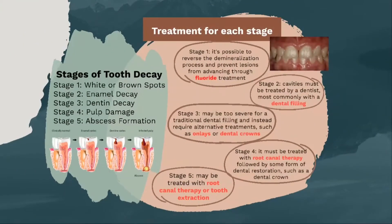So what are the treatments for each stage? Stage 1: it's possible to reverse the demineralization process and prevent lesions from advancing through fluoride treatment. Stage 2: cavities must be treated by a dentist, most commonly with a dental filling. Stage 3: may be too severe for a traditional dental filling and instead require alternative treatments such as onlays or dental crowns. Stage 4: it must be treated with root canal therapy followed by some form of dental restoration such as a dental crown. Stage 5: may be treated with root canal therapy or tooth extraction.